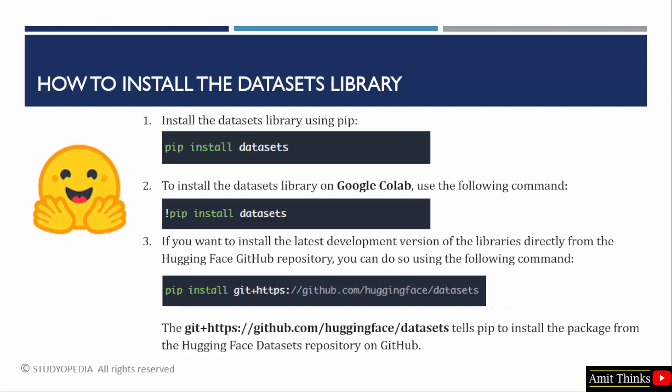Now let us see how to install the datasets library. You can use pip — pip is a package manager to download, install and manage Python packages and libraries. Just use the command 'pip install datasets'. You can also use Google Colab easily, but there is a difference in syntax — you have an exclamation mark for Google Colab. You can also directly download it from the Hugging Face GitHub repository using 'git+https://github.com/huggingface/datasets', which tells pip to install the package from the Hugging Face Datasets repository on GitHub.